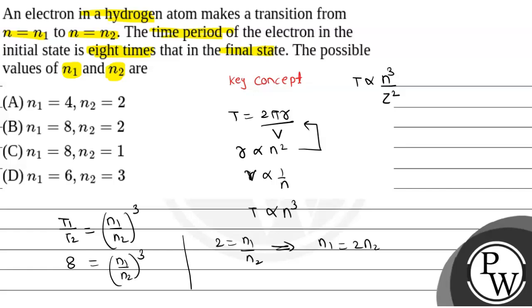The ratio should be 2 times, which is in option A. n1 is 4 and n2 is 2, which is correct for option A. The correct option is option A, that is n1 equals 4 and n2 equals 2.